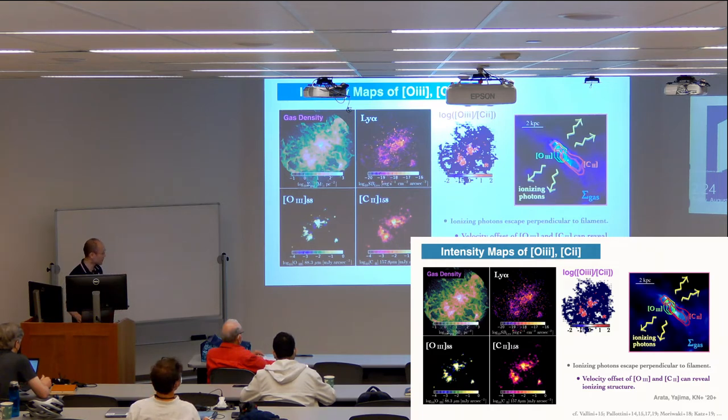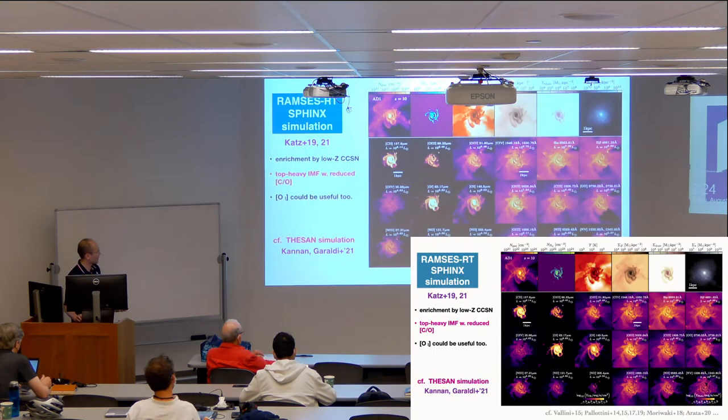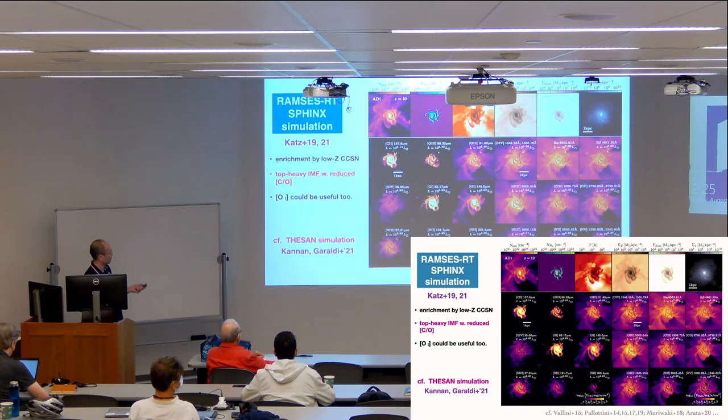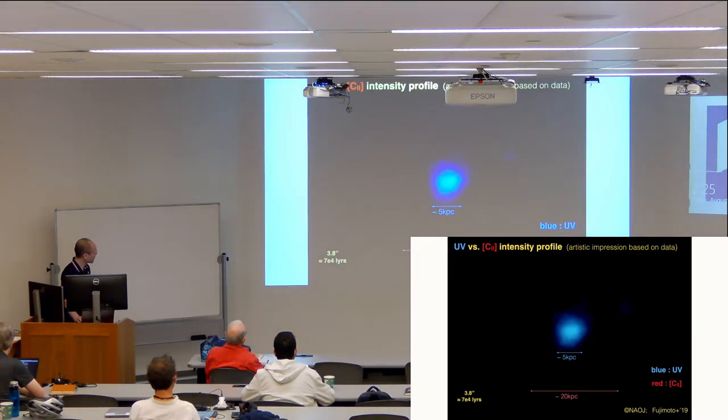Velocity offsets of these lines can reveal ionization structure at very early universe and examine this further will tell us about the reionization process. Other people have done similar work. One example here is RAMSES RT SPHINX simulations. There's a lot of progress on this front as well that people can now do on-the-fly radiation transfer calculation coupled together with the star formation and feedback, which is kind of previously difficult to do. This paper by Katz 19 and 21 evaluates looking at this variation of lines, not just carbon or oxygen but looking at the implication of early chemical enrichment. Dawn simulation using AREPO is doing something similar by Kannan and Grudi, also looking at radiation transfer in early universe.